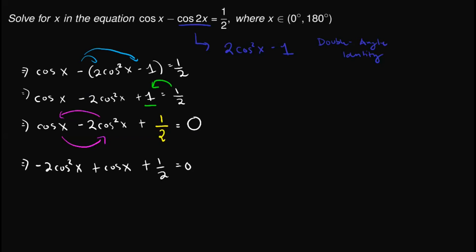And lastly, just to simplify things, we can multiply 2 in the whole equation to remove this denominator. And we can also multiply a negative 1 to turn this into positive. So this would become 4 cosine squared x minus 2 cosine x minus 1 equals zero.